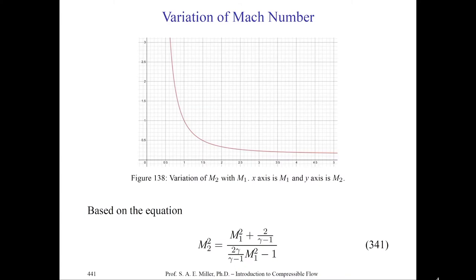Looking more closely at M2 versus M1: at M1 = 1 we have M2 = 1, and as M1 increases to 5, M2 levels off quickly. For M1 < 1 — which violates the second law — M2 becomes very large, meaning the shock would accelerate the flow, which is physically impossible.